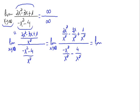Now let's simplify every fraction we have here. 2x squared divided by x squared leaves just 2. Minus 3x divided by x squared is minus 3 divided by x, plus 1 divided by x squared. And on the denominator, minus x squared divided by x squared is minus 1, minus 4 divided by x squared.